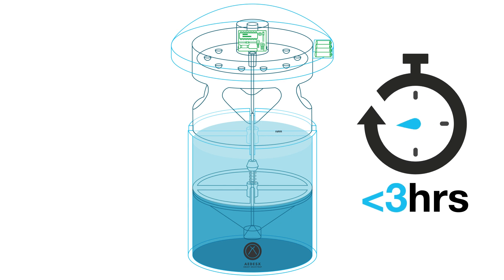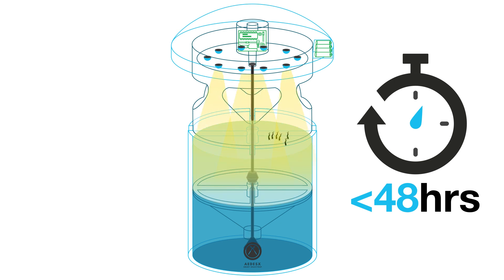After several hours, the eggs hatch and the larvae become active within the top part of the trap. Every 48 hours, the Aedes X Smart Gravitrap begins an operation cycle. This consists of a simultaneous initiation of the LEDs and the opening of the valve at the mouth of the funnel.